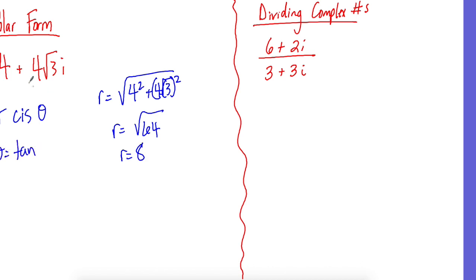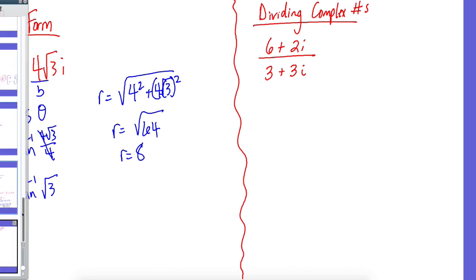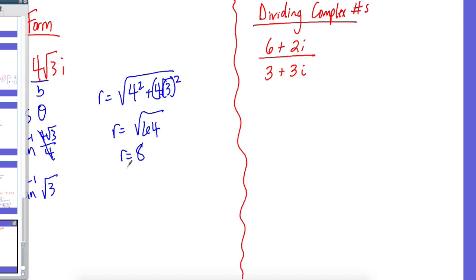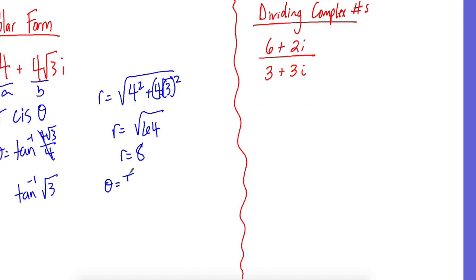Theta equals tan of B over A. Four square root of three over four, those cancel out, so tan is the square root of three. Now you would use your unit circle and figure out where does the inverse of tangent at square root of three equal. When you do that you get 60 degrees, which we want to use radians. If you don't know that off the top of your head, go to your unit circle. 60 degrees is pi over three, so that means theta equals pi over three.